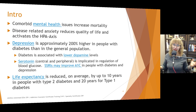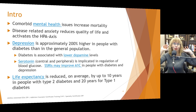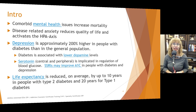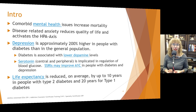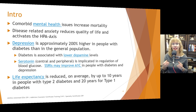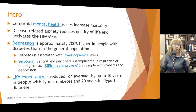Both central serotonin — the serotonin in the brain — as well as peripheral serotonin, since we have serotonin receptors throughout our body, are implicated in the regulation of blood sugar. Interestingly, SSRIs — selective serotonin reuptake inhibitors — may improve blood sugar levels or A1C levels in people with diabetes and depression. If someone has diabetes and depression concurrently, it may indicate low serotonin, and the SSRI may improve not only their mood but also their blood sugar — that's a double winner.